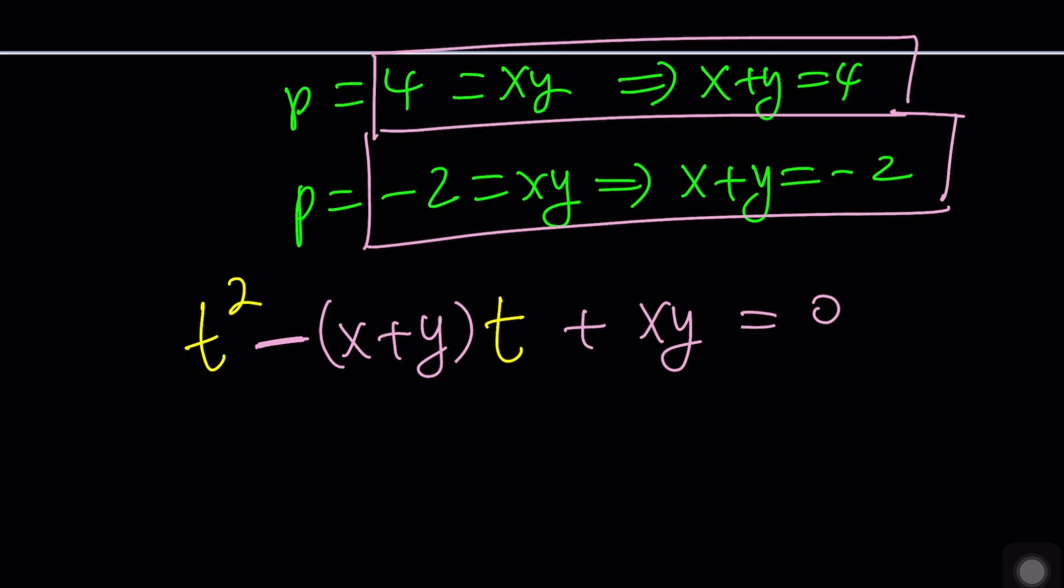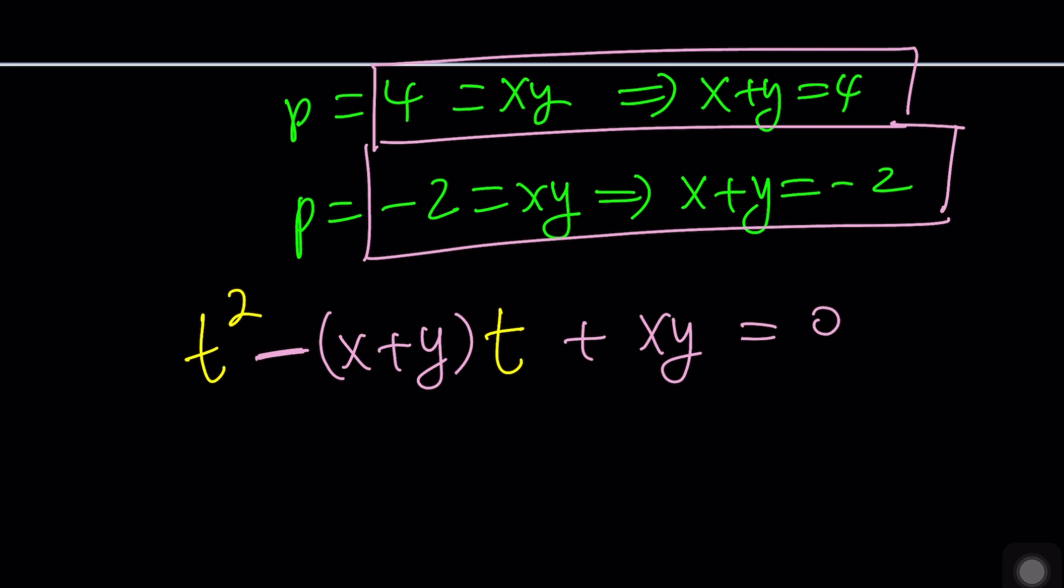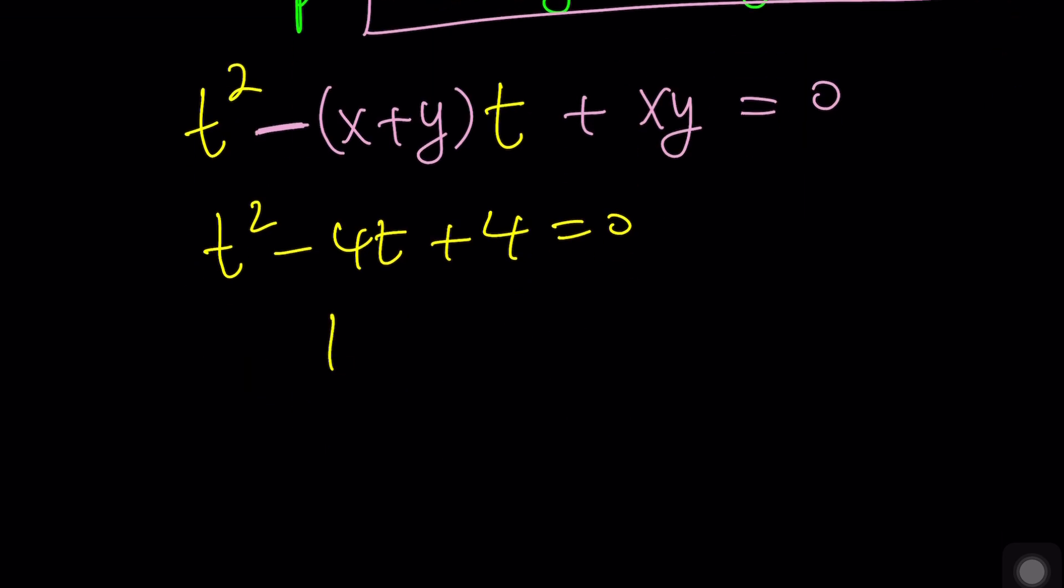So what do we do? We replace X plus Y and XY with those values. Let's just start with the first pair. We get T squared minus 4T plus 4 equals 0. As you know, this is T minus 2 squared equals 0. And from here, you get T equals 2. And if T is 2, X and Y are both 2. Get the idea? There are both 2. That's it. Done. Great.